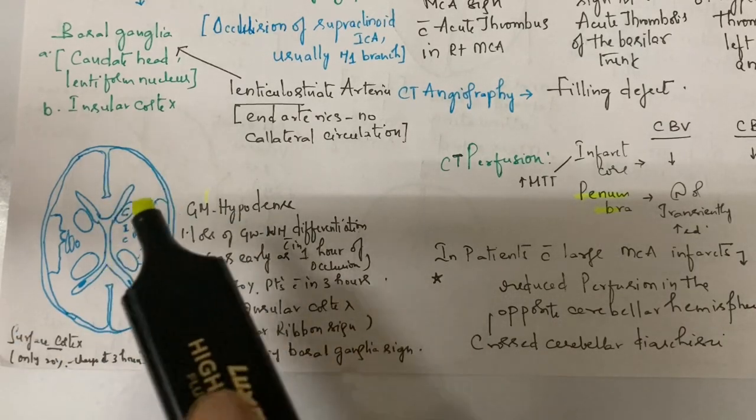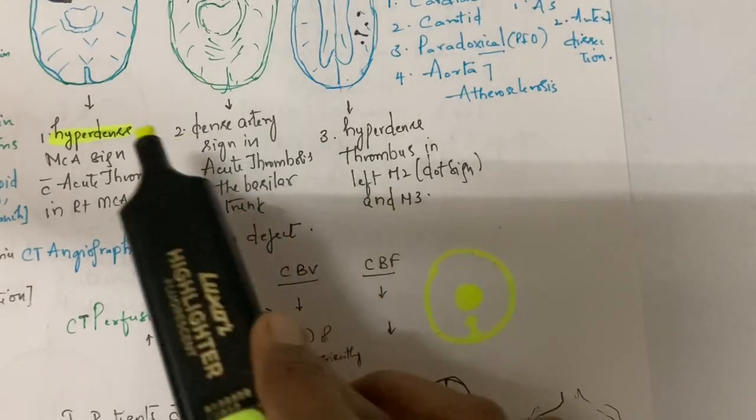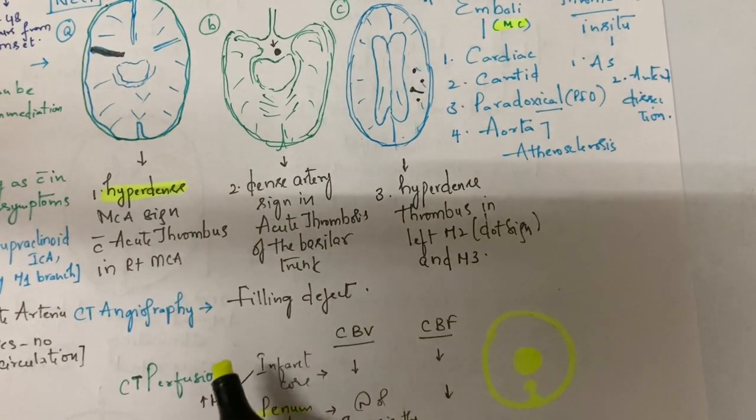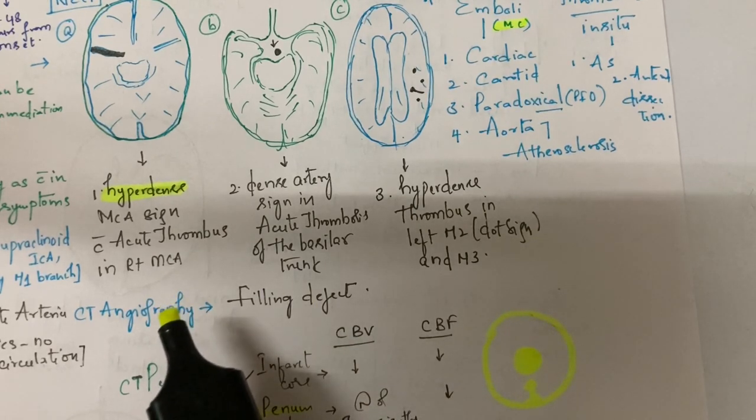Here we can see the hyperdense sign. If you do CT angiography on the same patient, a filling defect can be seen. The importance of CT angiography is that the large vessel and site of thrombus can be seen clearly.